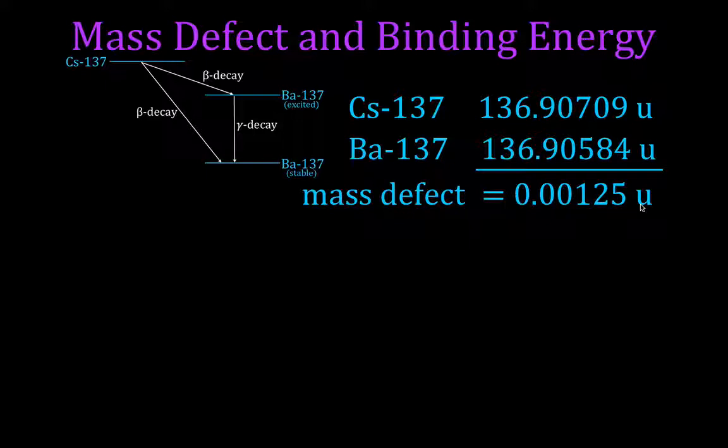Now we want to know the binding energy, the energy released. And in order to do that, we're going to use Einstein's equation. Well, in order to use Einstein's equation, we have to convert atomic mass units into kilograms. Because the mass in Einstein's equation is expressed in kilograms. This has to be kilograms and this is joules.